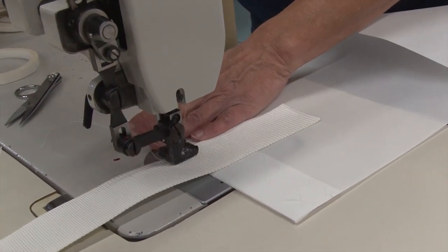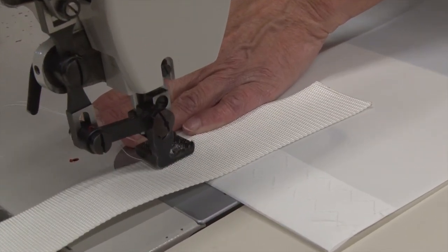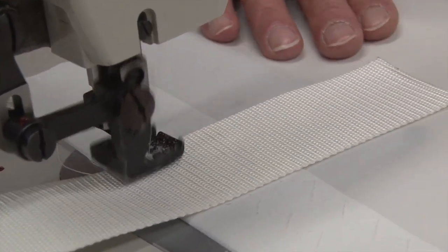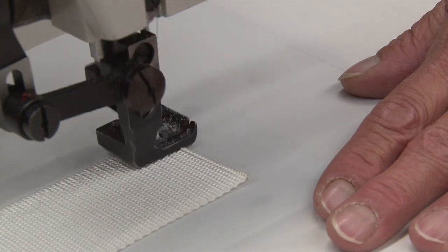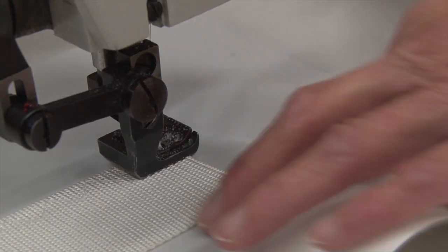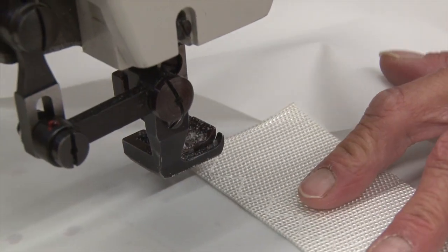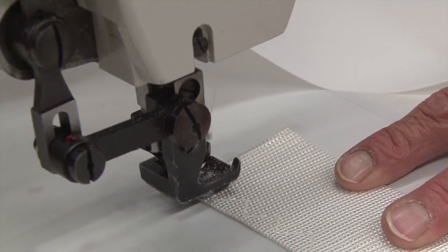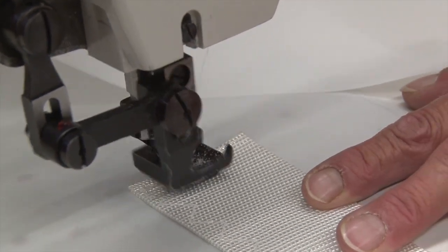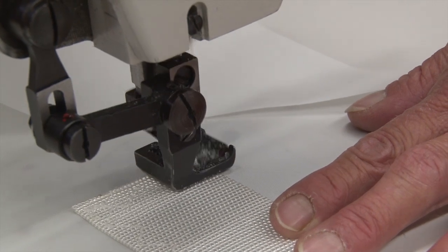Anytime you're sewing a length of stitches, you should do some reversing at the beginning and the end. Even though we're using a 4 point sewing machine here, you can use a 2 point sewing machine and follow the same exact procedure.